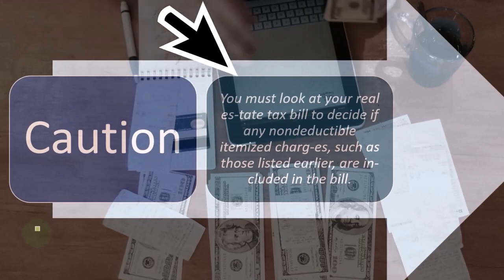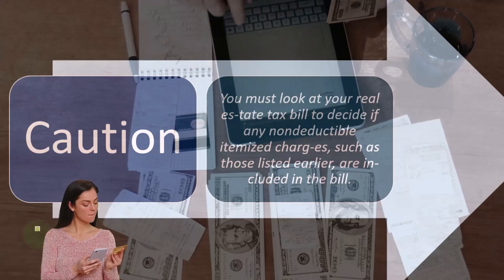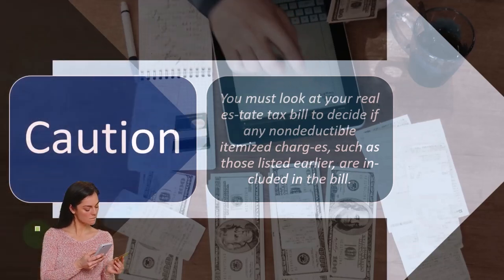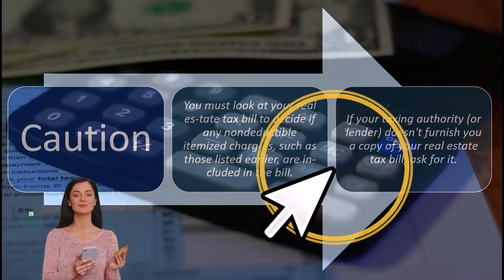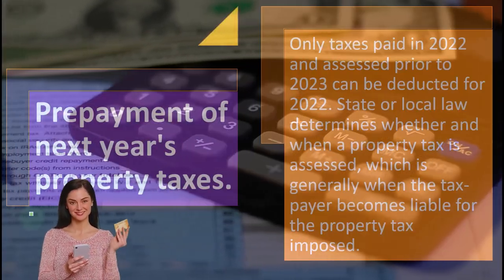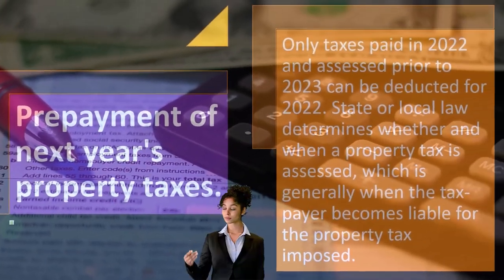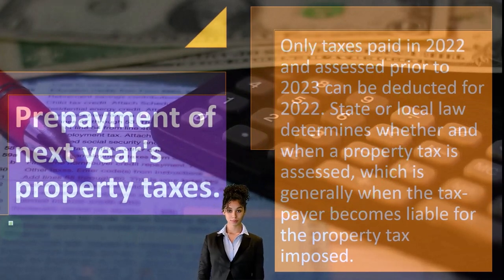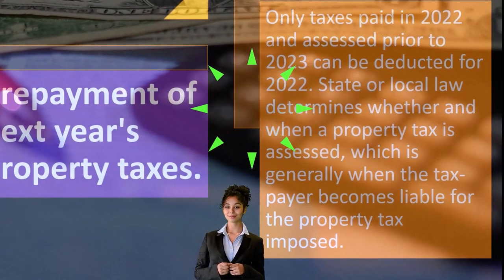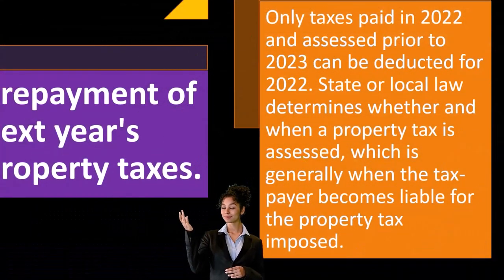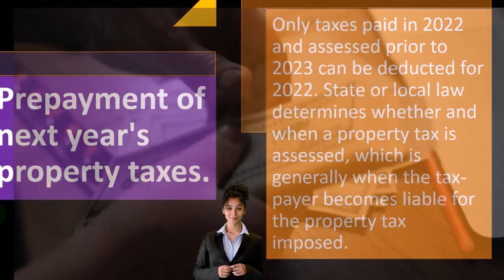Caution: you must look at your real estate tax bill to decide if any deductible charges — such as those listed earlier — are included in the bill. If your taxing authority or lender doesn't furnish a copy of your real estate tax bill, ask for it. Regarding prepayments of next year's property taxes: only taxes paid in 2022 and assessed prior to 2023 can be deducted for 2022. We have a cash-based system here, and cash-based systems are more manipulable than accrual-based systems, though they're easier to track.